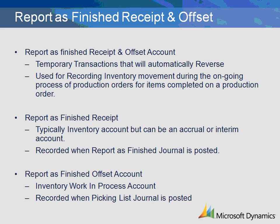The Report As Finished Offset Account Transaction is the setup related to the recording of a completed production order quantity on the production order. The transaction is created when the report as finished journal is posted and serves as the offset to the report as finished receipt transaction. The ledger account for this transaction is typically the inventory work in process and is credited at the time of the journal posting.